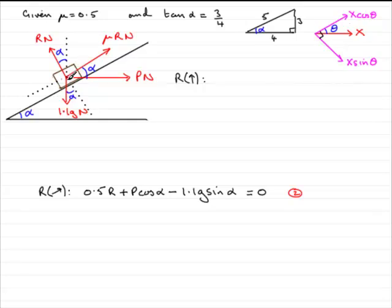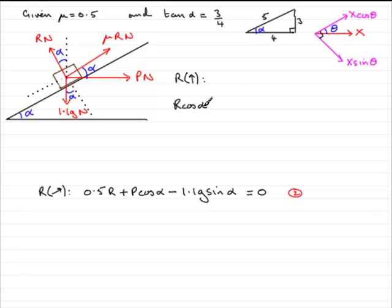So let's resolve upwards. If we resolve upwards, part of R acts upwards. We've got to split R — because it doesn't lie on this line — into two components: one upward and one horizontal. We're not interested in the horizontal component because it's perpendicular to this direction. It contains the angle, so it's going to be cosine — R cos alpha. So we start with R cos alpha, which is the component of R in the upward sense.